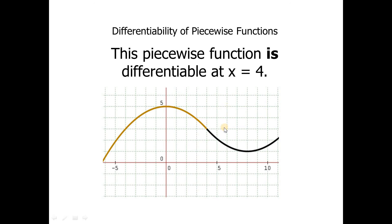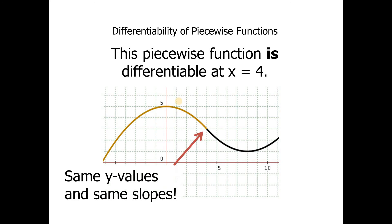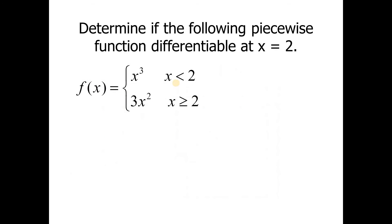This third piecewise function is differentiable at x equals 4. The two pieces meet each other, the function is continuous with the same y value, and they have the same slope — it's a nice smooth connection at x equals 4. So this function is both continuous and has the same slope, therefore it is differentiable.